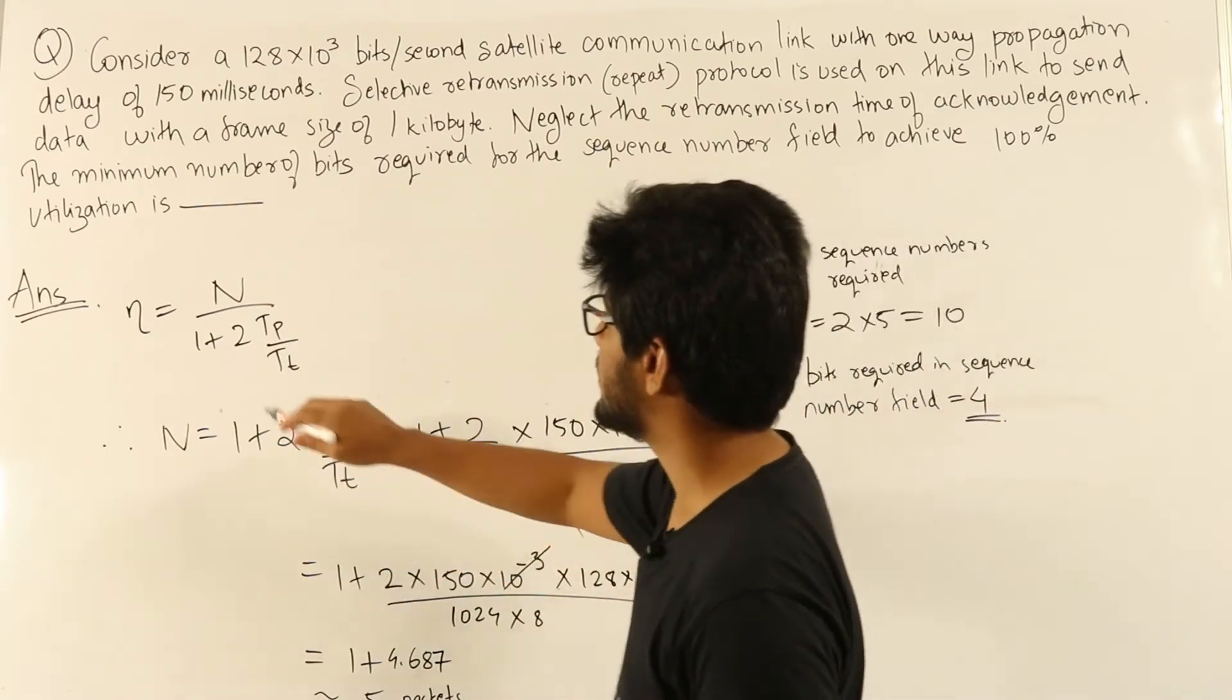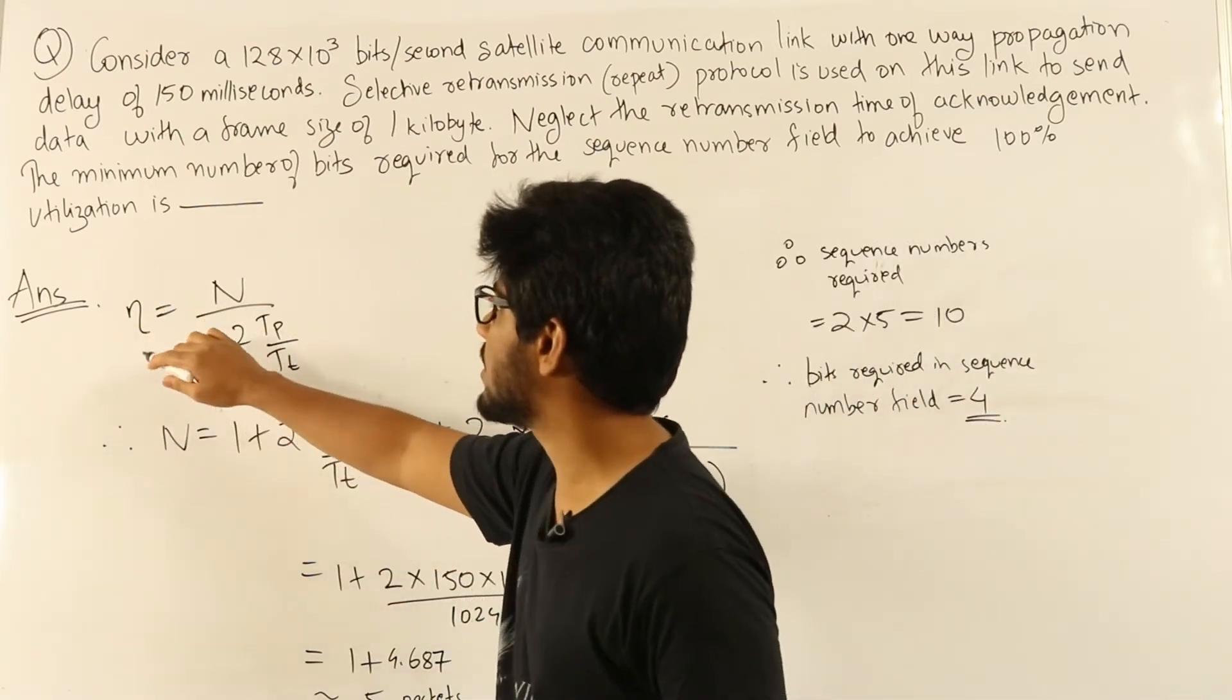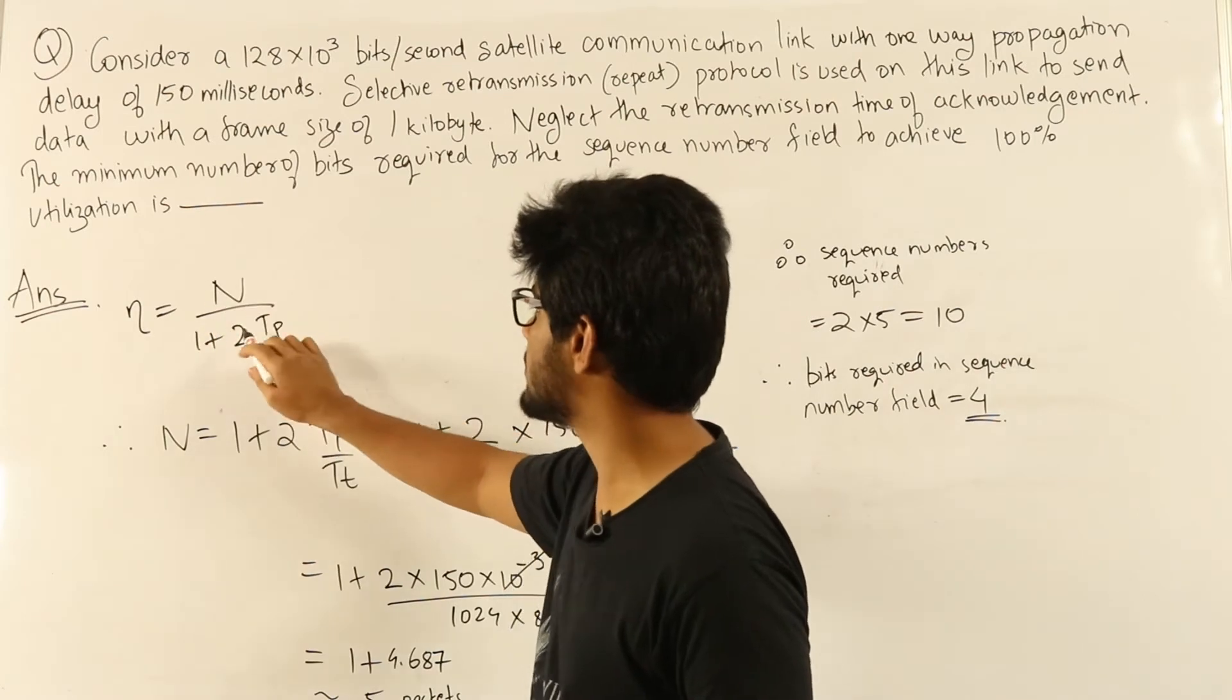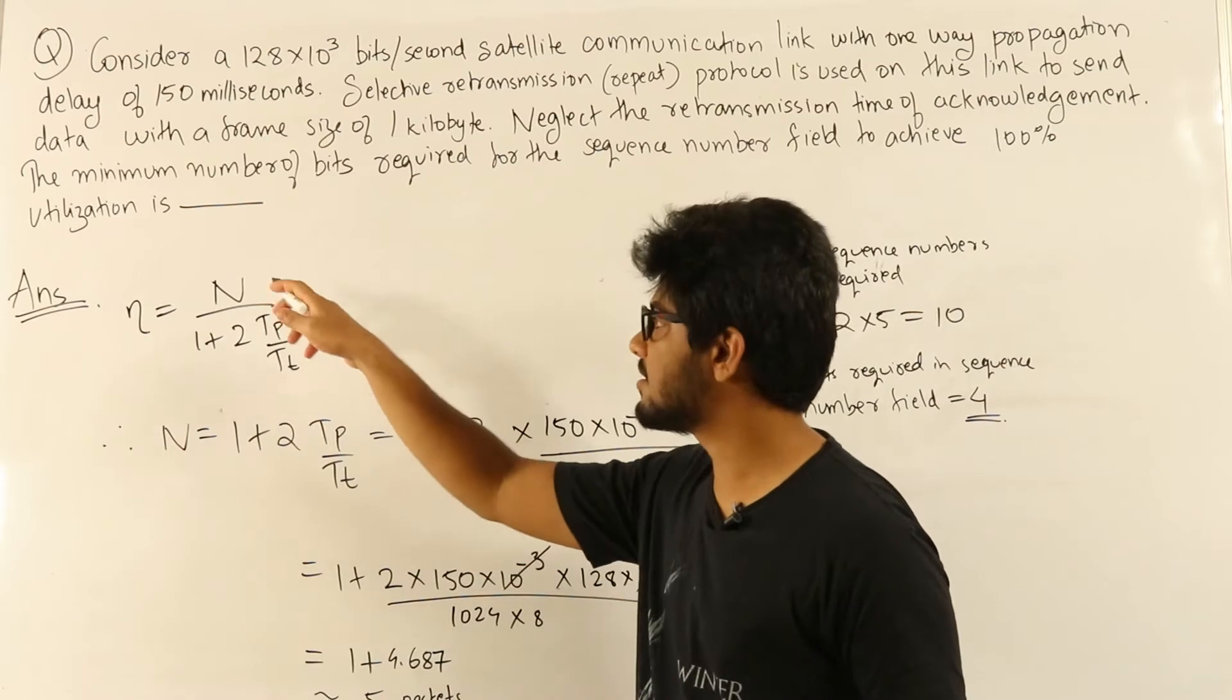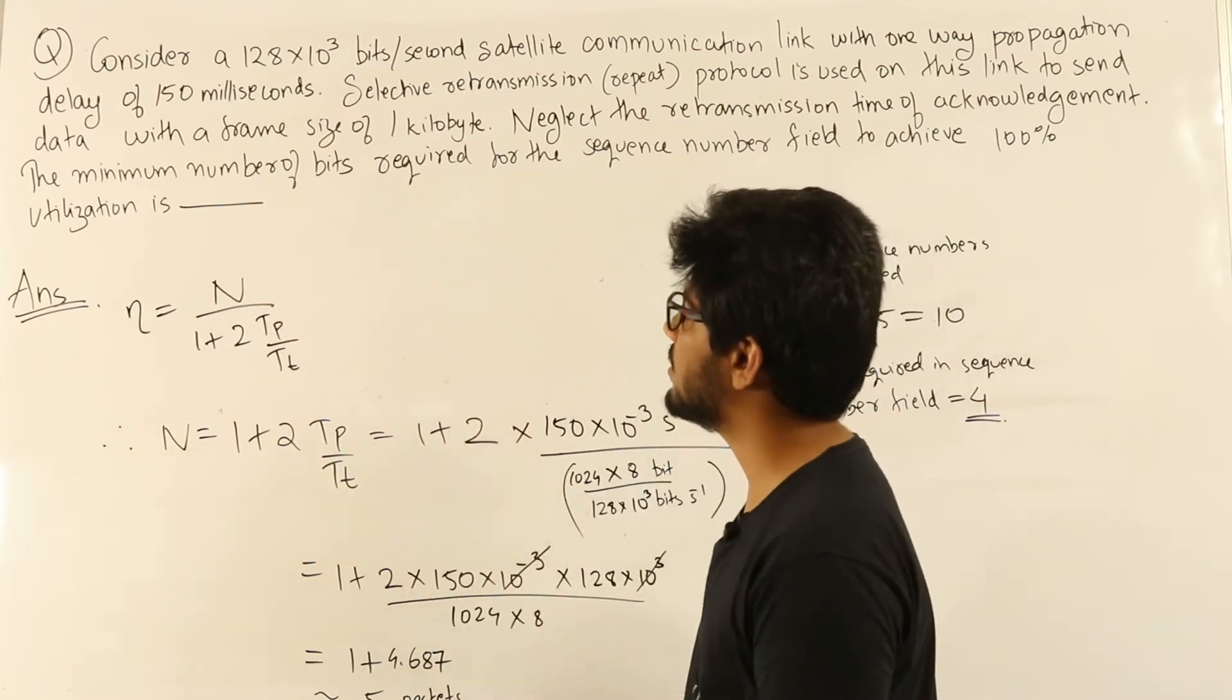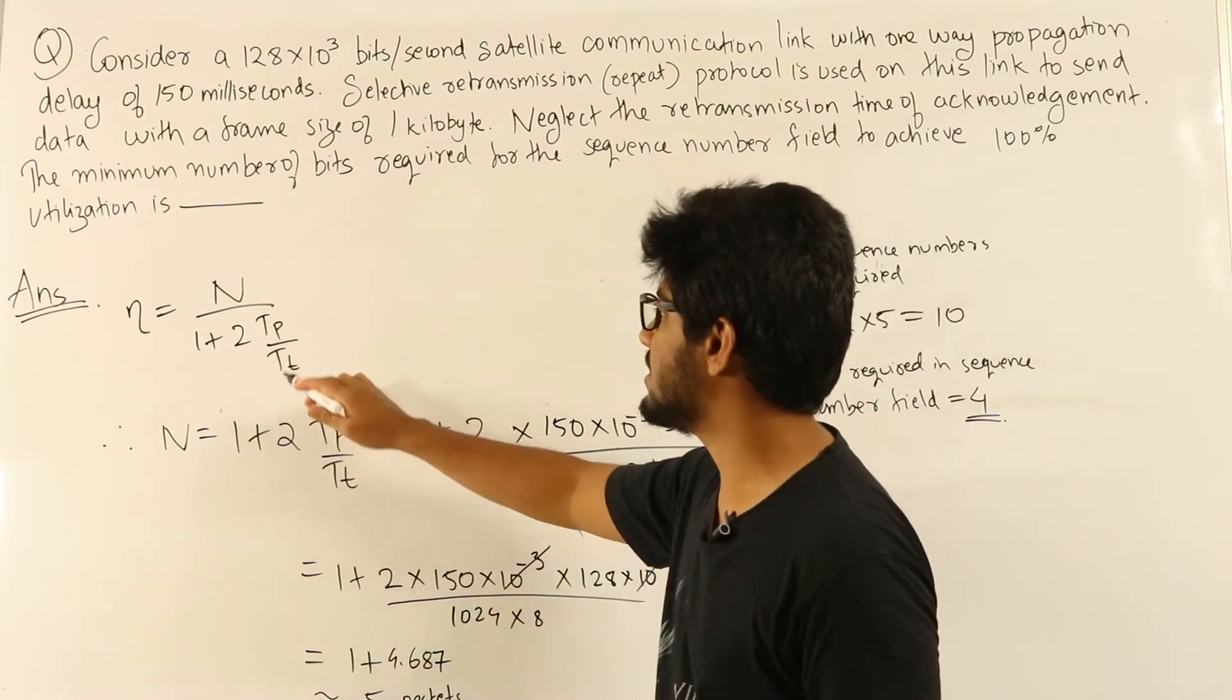Based on that knowledge, efficiency in SR protocol is given as efficiency = n / (1 + 2Tp/Tt), where n is the number of packets sent in one round, Tp is propagation delay, and Tt is transmission delay.